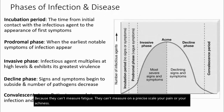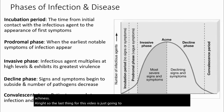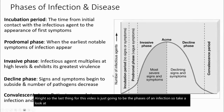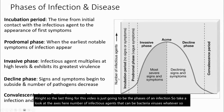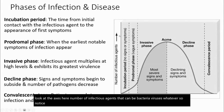The last thing for this video is the phases of an infection. Take a look at the axes here: the y-axis shows the number of infectious agents — bacteria, viruses, whatever — which increases as it goes higher. And along the x-axis, that's going to be time.